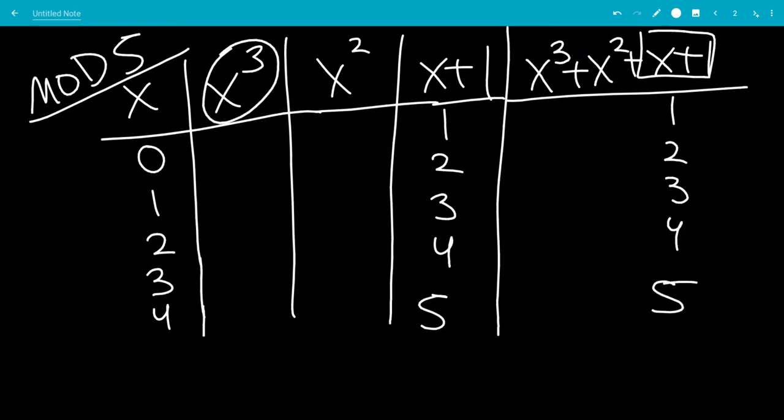Okay, 0 cubed, we're going to look at this column. So 0 cubed is 0, 1 cubed is 1, 2 cubed is 8, which is congruent to 3 mod 5, 3 cubed is 27, which is congruent to 2 mod 5. And then 4 cubed is 64, which is congruent to 4 mod 5.